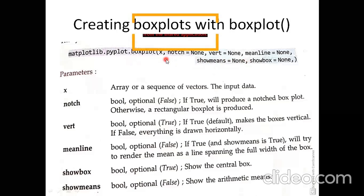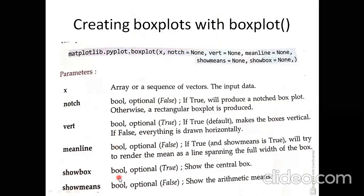Now if you are drawing a box plot, there are many arguments. First is x — the array or sequence of vectors, meaning whatever data has been given will be considered as x. The second argument is notch. All these arguments have boolean values — they can be true or false.